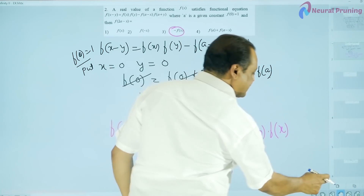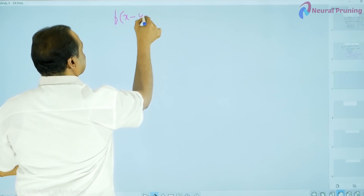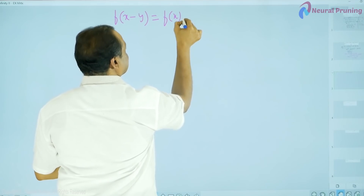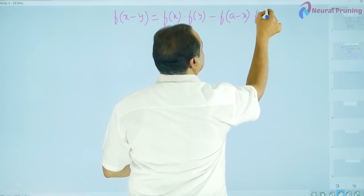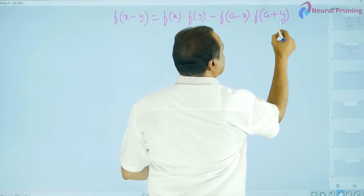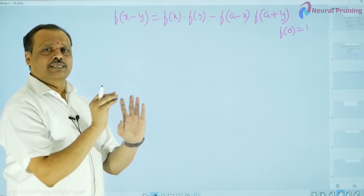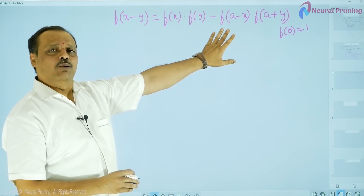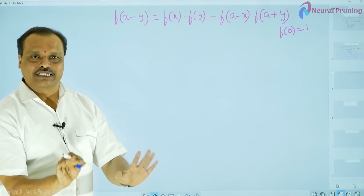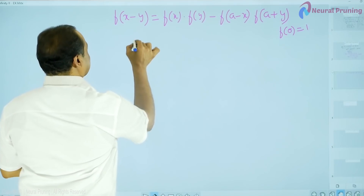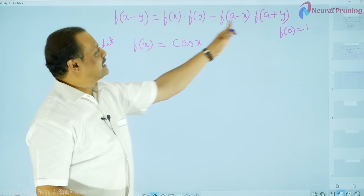This was the first direct method. Let us now go for another method to solve the same problem. Observing the given condition, we are dealing with a compound angle form x - y. This type of expansion occurs only for trigonometric functions. So we identify the function — let f(x) = cos x.